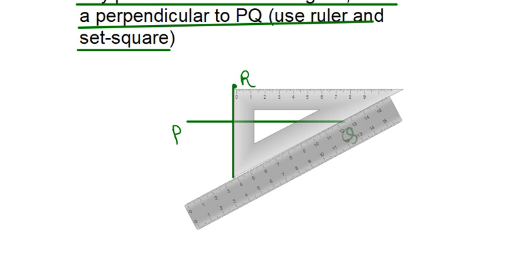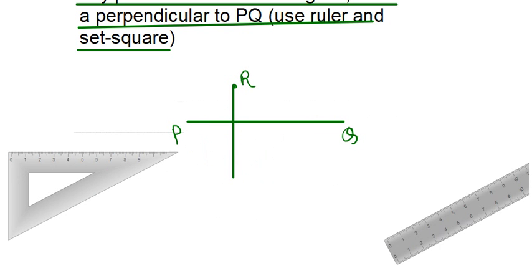This you can even name if you want. So, suppose I name it as QR, sorry not QR, suppose I name it as B. Now, BR, so you can see a perpendicular is made and this is the perpendicular line to our line segment PQ, alright.